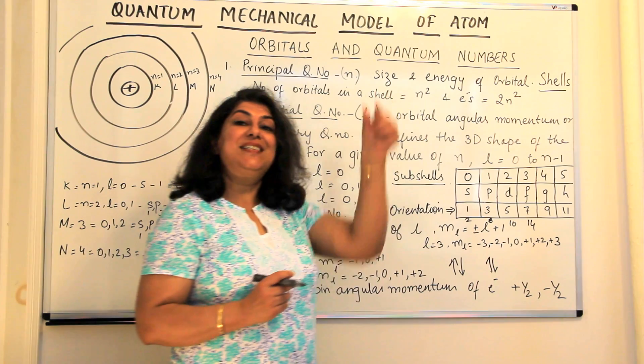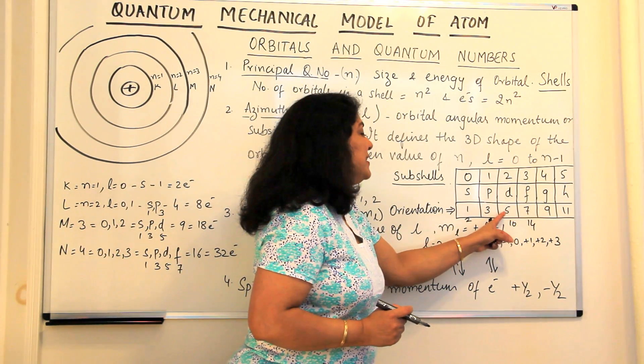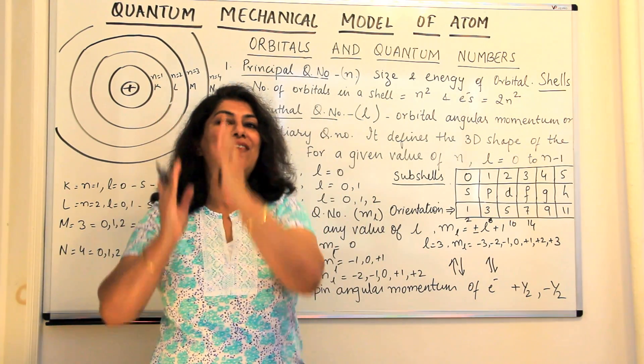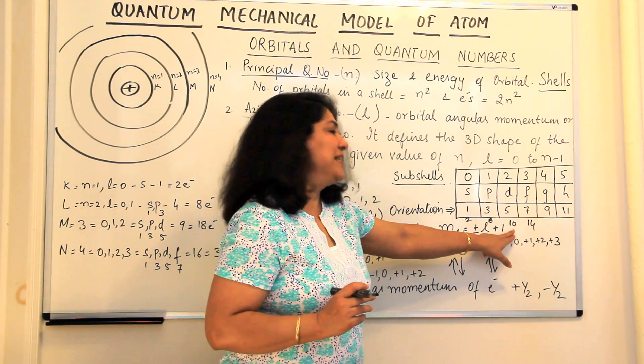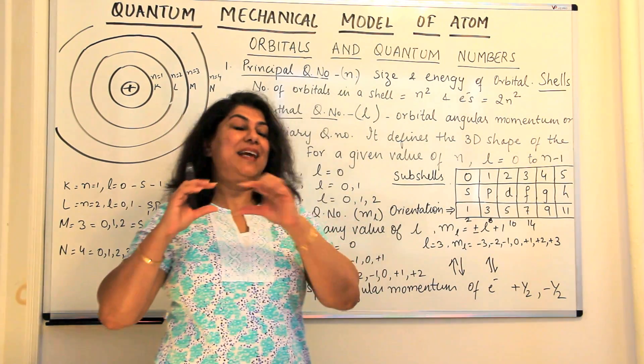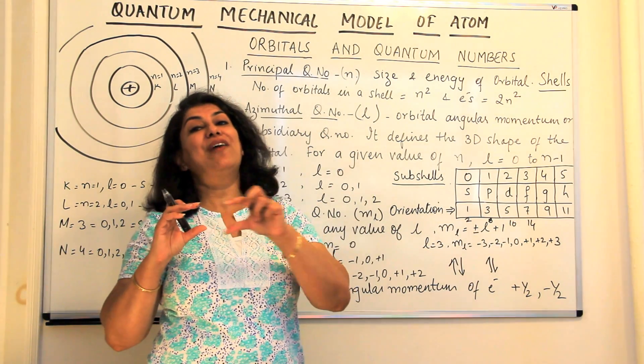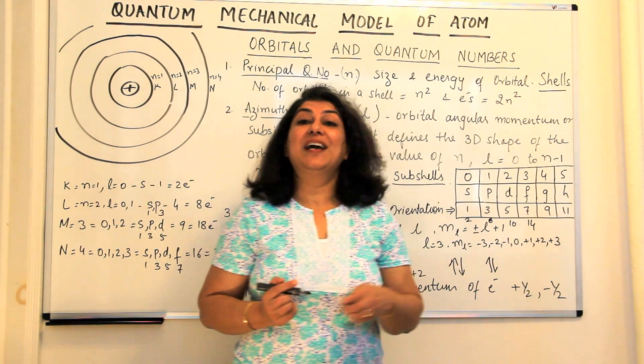Then in D orbitals, there are 5 orbitals and therefore you can have 10 electrons and therefore we have 10 rows of D block elements. And F block elements, there are 7 orbitals, they can have 14 electrons and hence we have 14 rows of the F block elements.